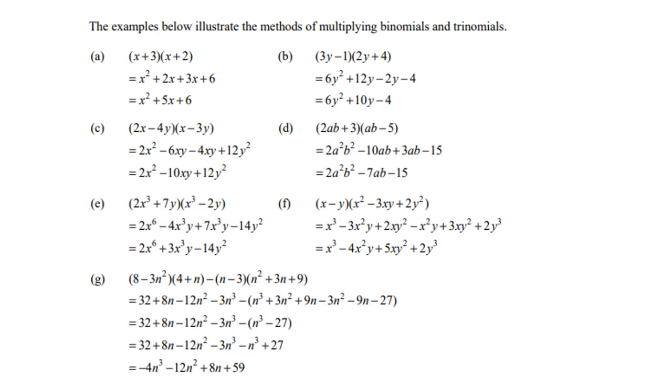Be careful with the signs when you multiply with a negative. All the signs must change. Collect your like terms. And you get X cubed minus 4X squared Y plus 5XY squared plus 2Y cubed.